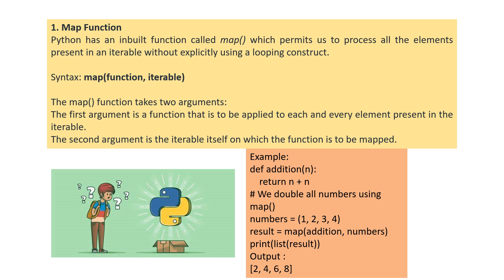Here we are defining the function addition with def keyword, def addition of n, which returns n plus n. We are doubling the numbers using the map function. Numbers equals 1, 2, 3, 4. The result equals map of addition comma numbers. We are printing the list of results. This addition is applied on the numbers 1, 2, 3, 4 and the result is output as 1 plus 1 that is 2, and 2 plus 2 that is 4, and 3 plus 3 that is 6, and so on. The output is 2, 4, 6, 8. This can be easily achieved by this map function without explicitly using a loop constraint.